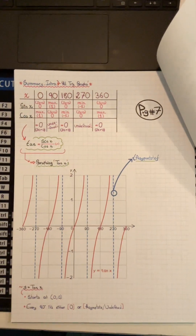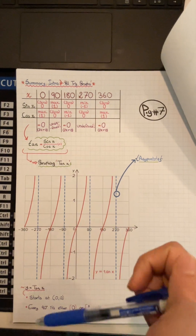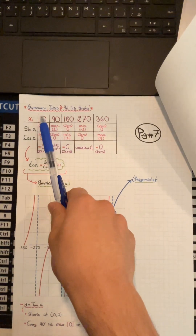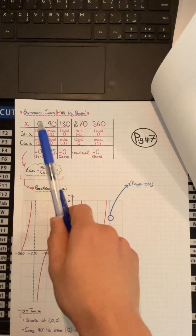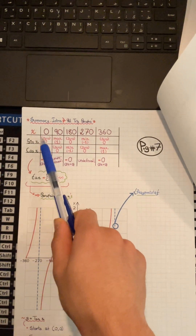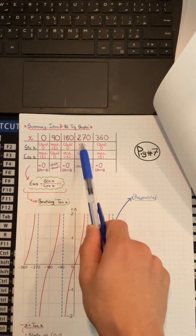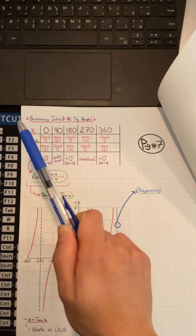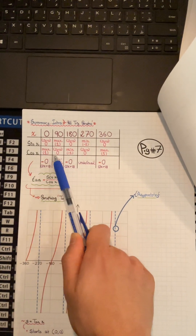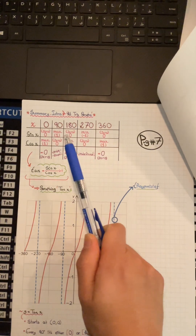Here's a summary intro to all the trig graphs. We have constant x-values. For sin x, it goes 0 to maximum to 0 to minimum to 0. For cos x, it is maximum, 0, minimum, 0, maximum.